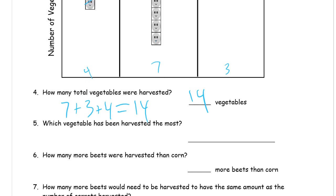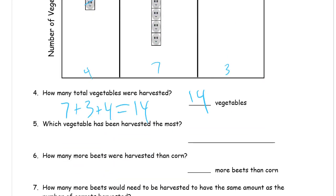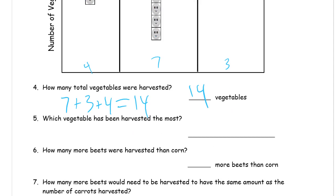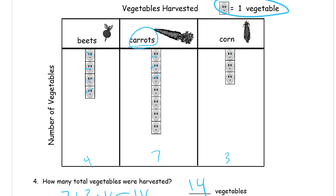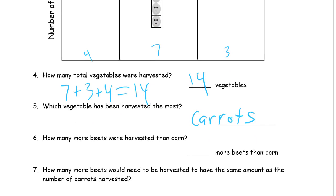Which vegetable has been harvested the most? There are more carrots — you can just see there are more carrots than anything else. The question says which vegetable, not how many, so we write carrots as our answer. How many more beets were harvested than corn? There are four beets and three corn — they're only one apart, so there's one more beet than corn.